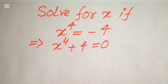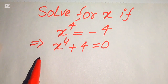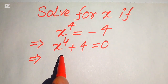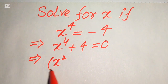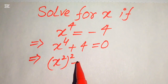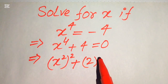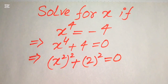In order to find the values of x we need to use the completing the square method. For this, we first rewrite this equation as x to the power of 4 written as x squared whole square, plus we write 4 as 2 squared, and this whole equation equals 0.